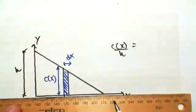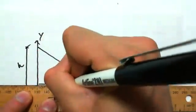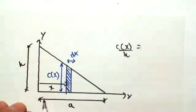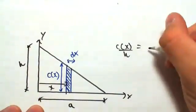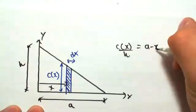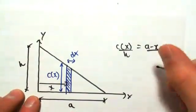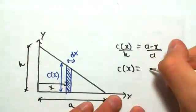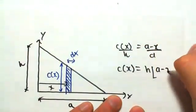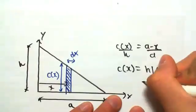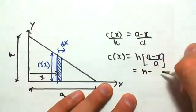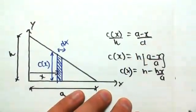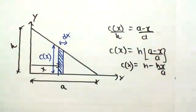equals this height, which would be a minus x, on top of the total height, which is a. Rearranging this, we would get c(x) equals h outside of (a minus x) on a, which we can simplify to h minus hx/a. So there's our function c(x) we're going to be working with.